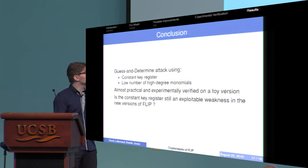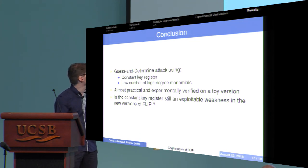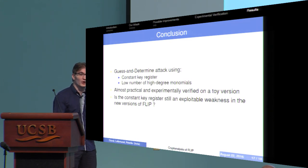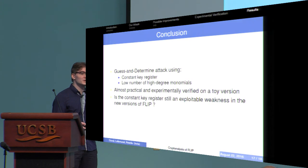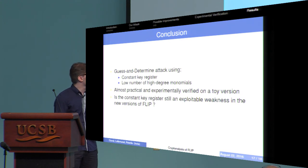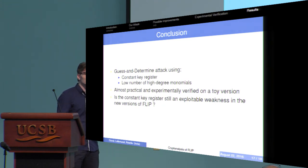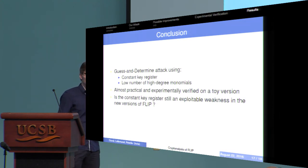To conclude, we have an attack on the FLIP family of stream ciphers using guess-and-determine techniques that exploit the constant key register and the low number of high-degree monomials in the filtering function. This attack is almost practical and we managed to verify it experimentally in a toy version. But there are still open questions: we attacked one instance, but it doesn't mean the structure itself is weak. One question is whether the constant key register is still an exploitable weakness in the new versions of FLIP. Thank you for your attention.